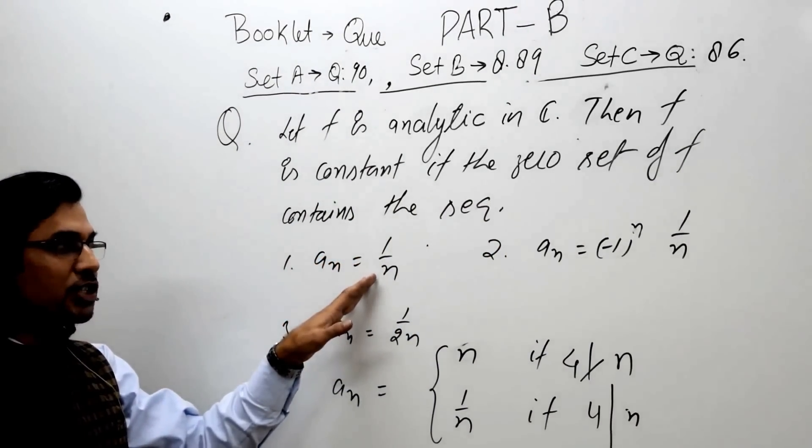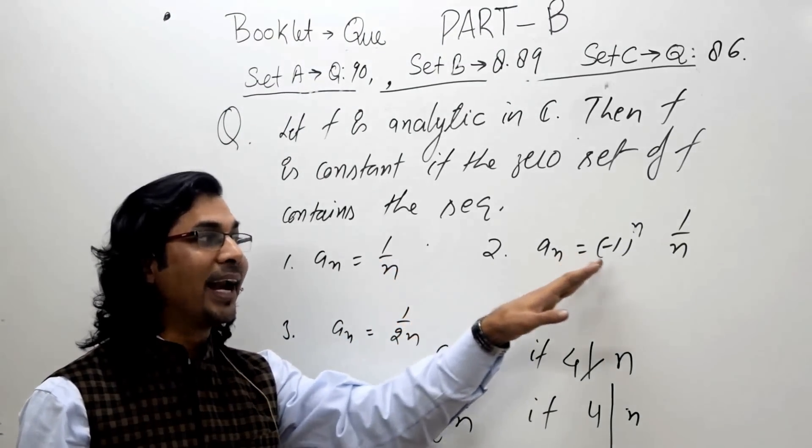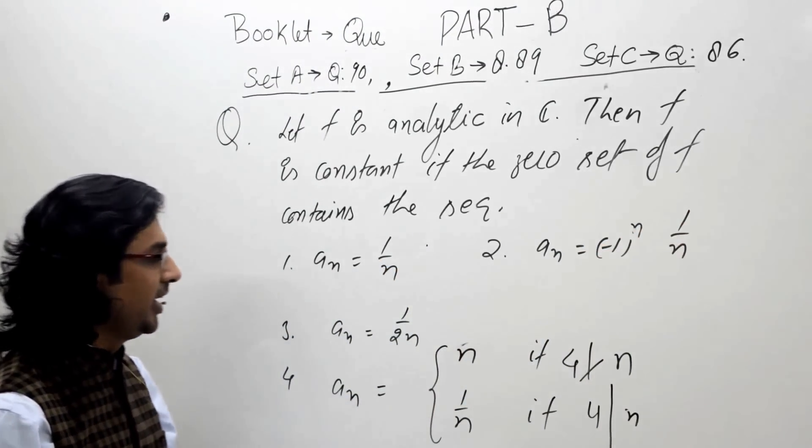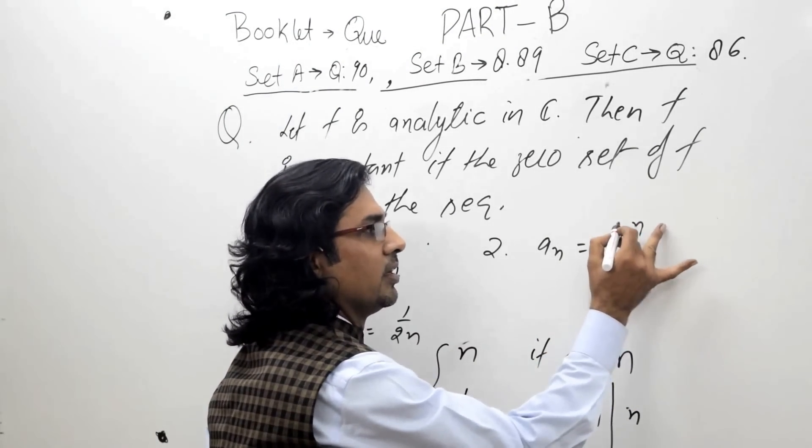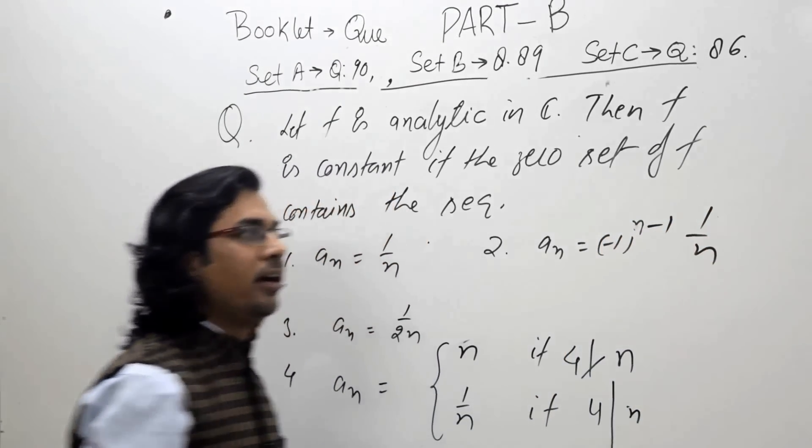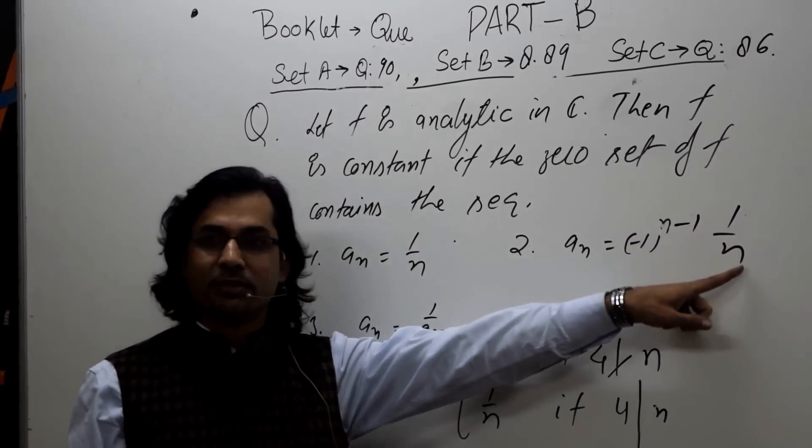First option: a_n = 1/n. Second: a_n = (-1)^(n-1) * 1/n, perhaps minus 1 to the power n minus 1, 1 upon n.